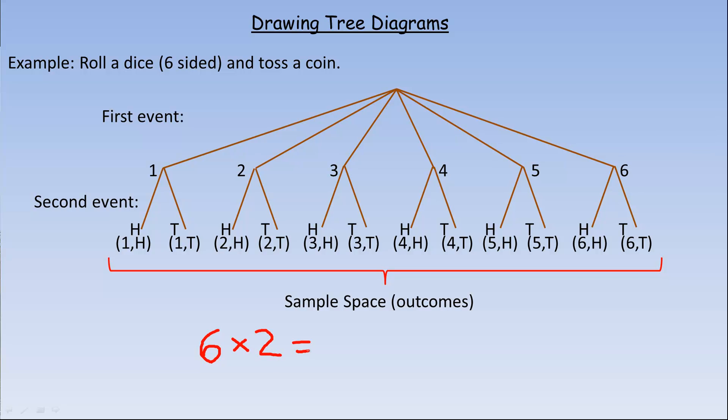then altogether there are 12 ways to do that. So that's why, if you look in here, there are 12 possible outcomes: there's six ways to roll the dice and there's two ways to roll the coin, so six times two gives you 12.